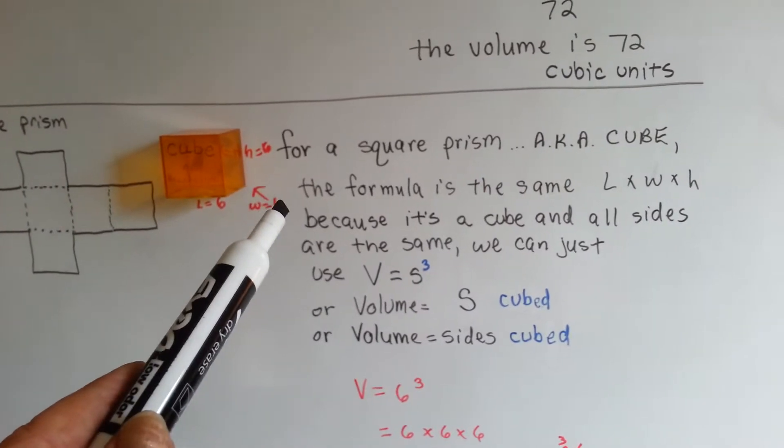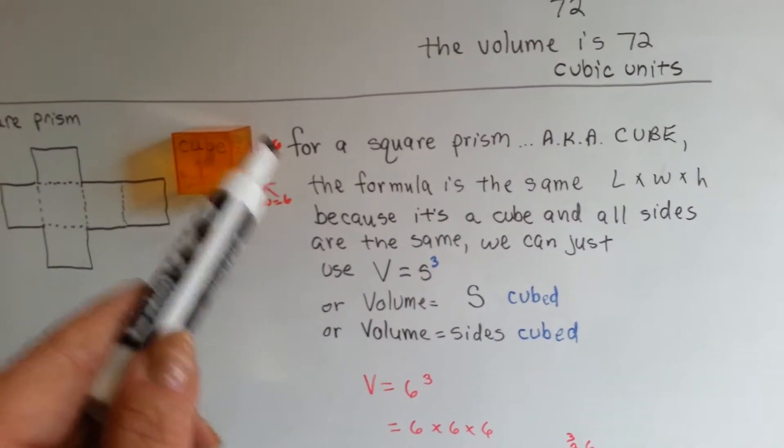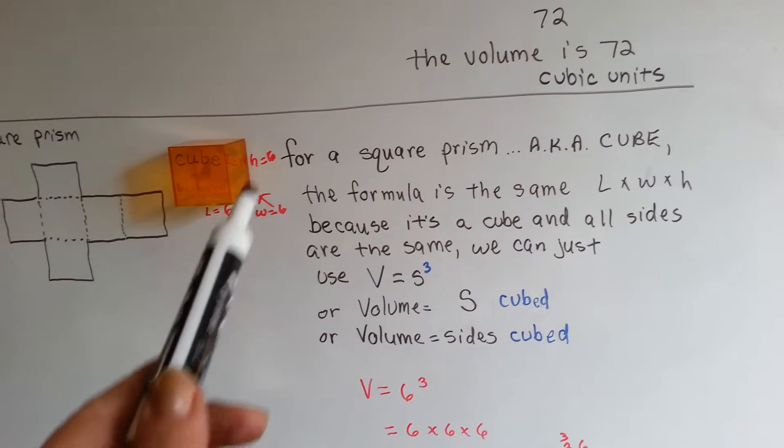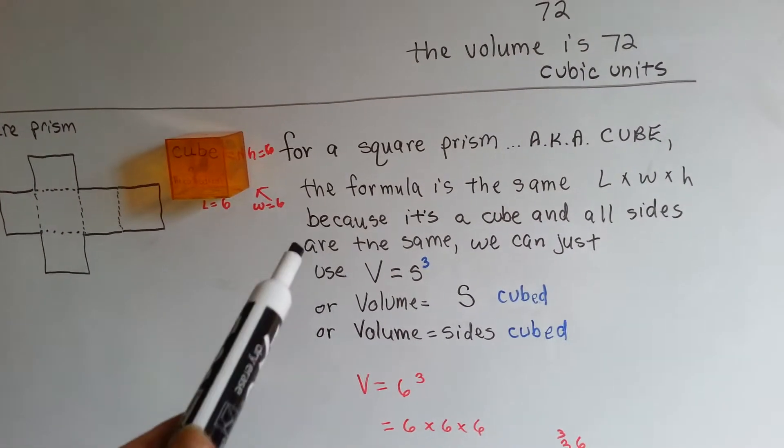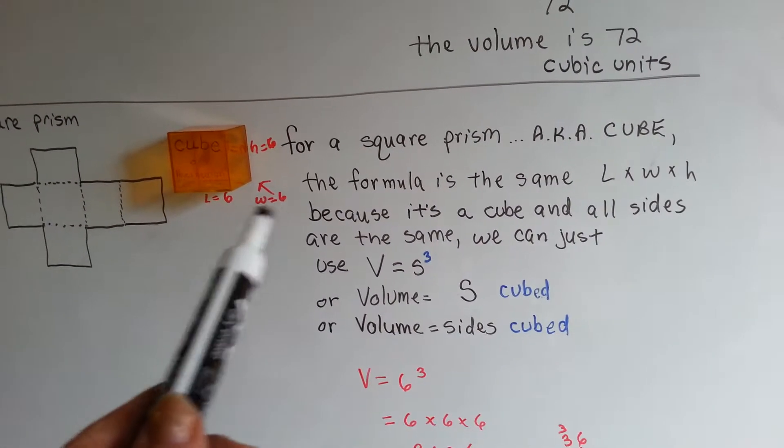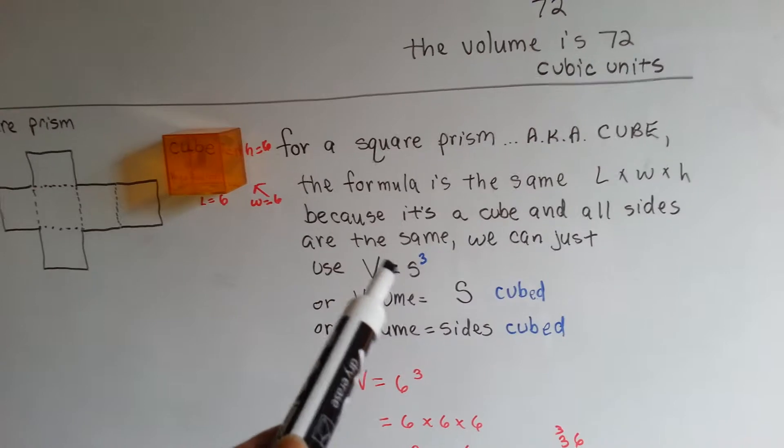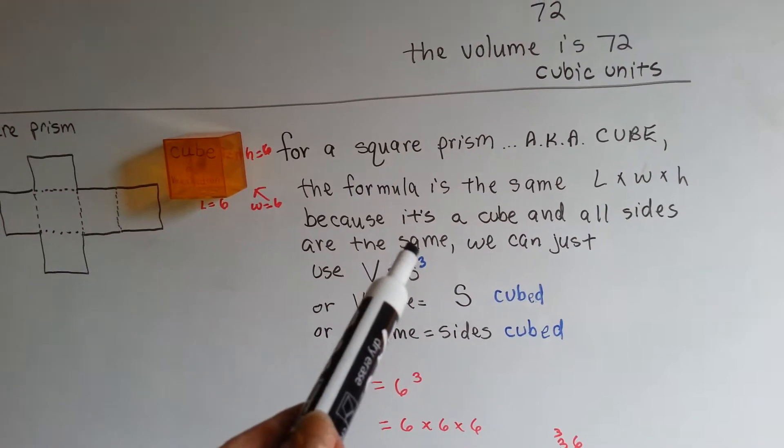All we have to do, in this case, because they're all the same, it's got the same formula of length times width times height, but these are all the same numbers. Because of that, and everything is all the same, we can just say volume V equals S to the third power.